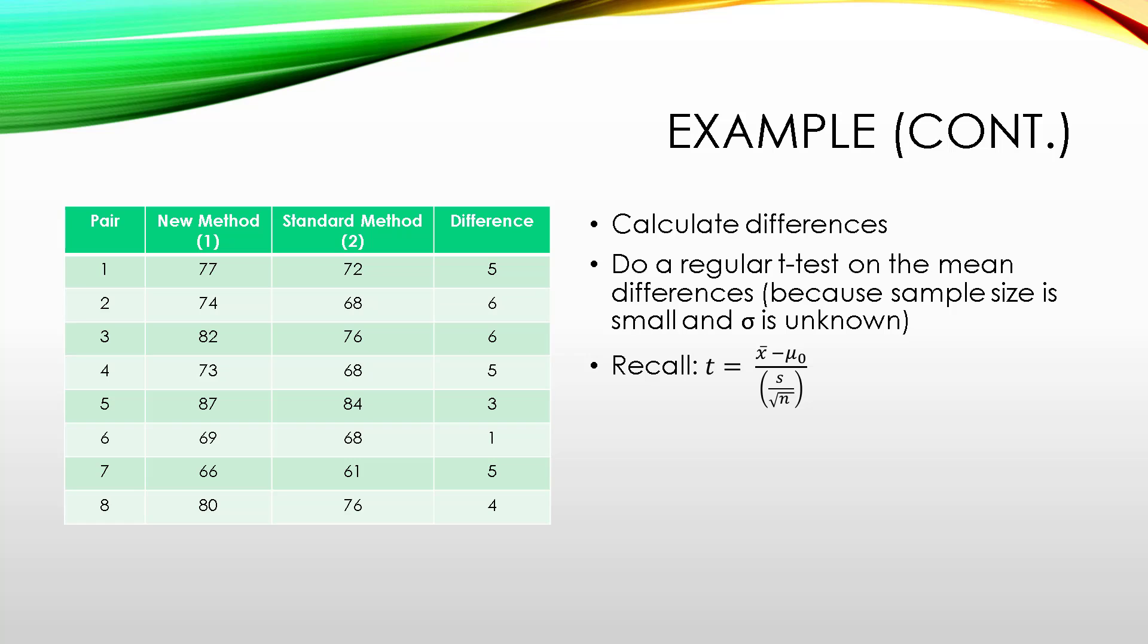So, recall that before when we did a t-test, we took the average to find the test statistic t, we found the average, subtracted the mean under H0, and divided by the standard error, s over the square root of n. We're going to do the same thing for the differences, but change the subscript slightly to account for the fact these are differences we're looking at. So, our test statistic for differences for matched pairs design will be the average sample difference, minus the difference under H0, divided by the sample standard deviation of differences, over the square root of the sample size, so 8 in our example.